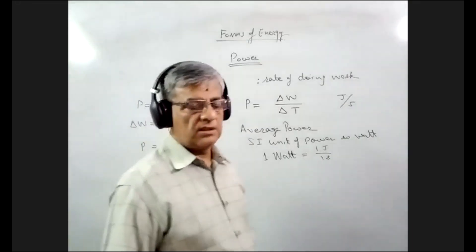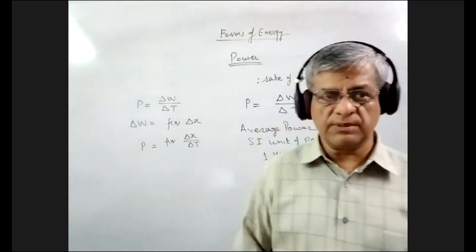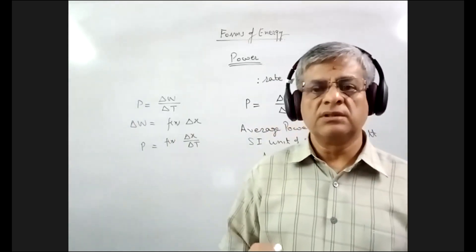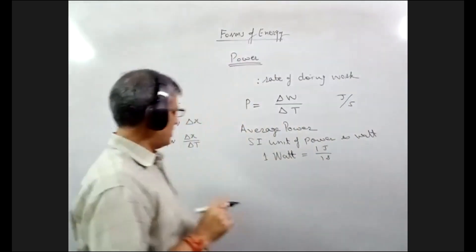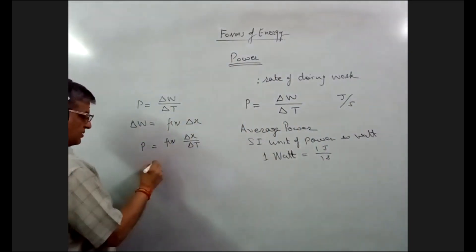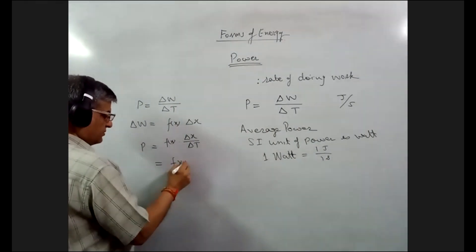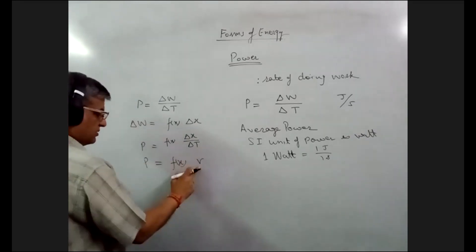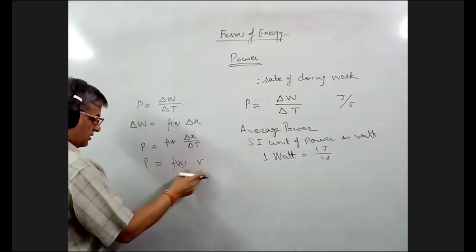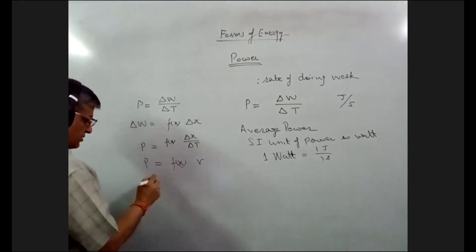So what is delta x upon delta T? Delta x upon delta T is rate of change of displacement. Rate of change of displacement is called velocity. So I can replace this by velocity. So this is F into velocity becomes power. Since this is an instantaneous velocity, so I call it instantaneous power.